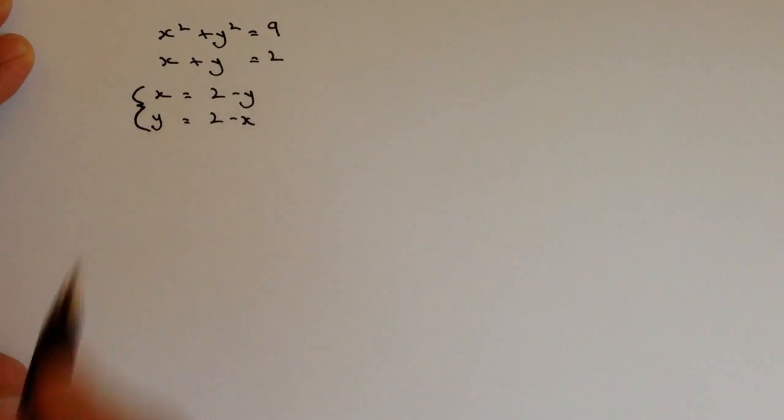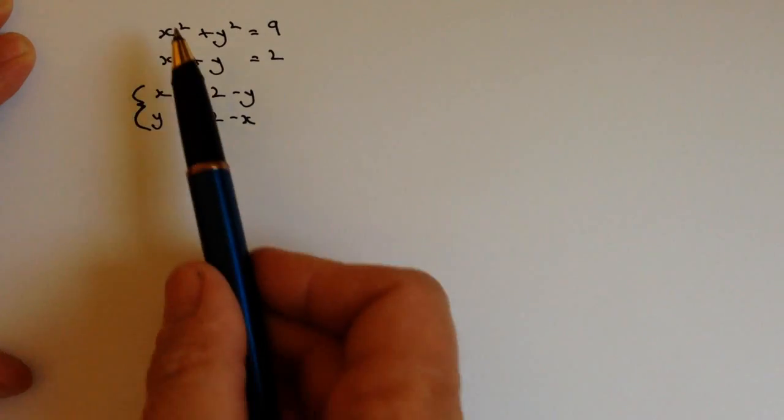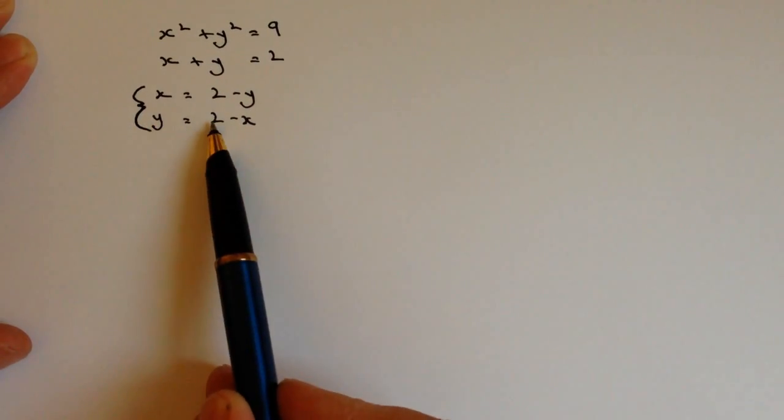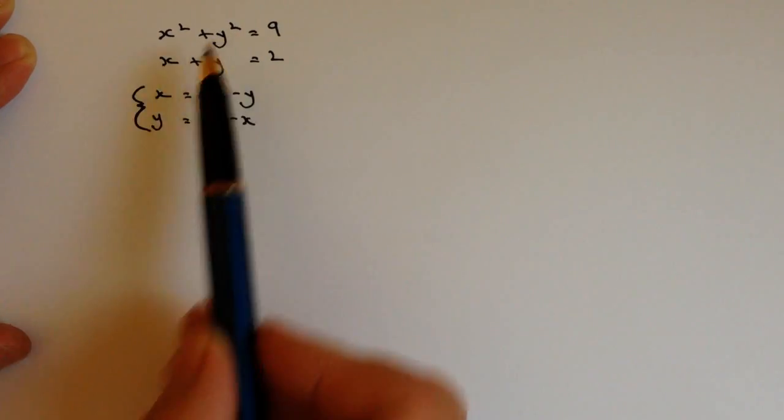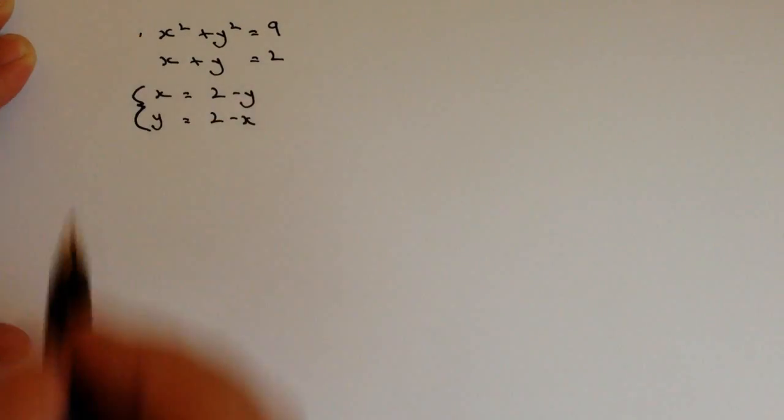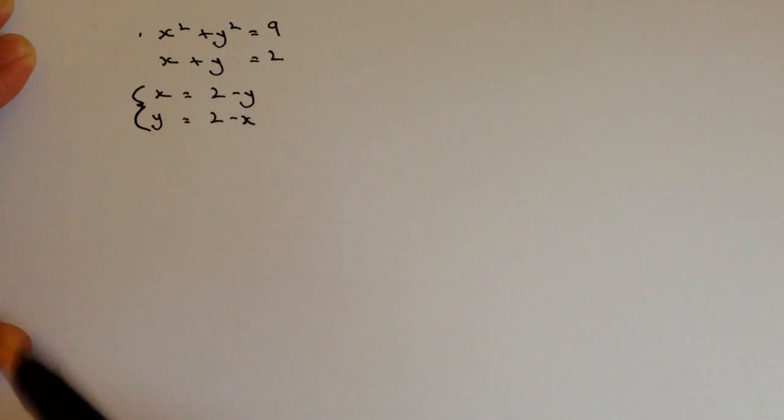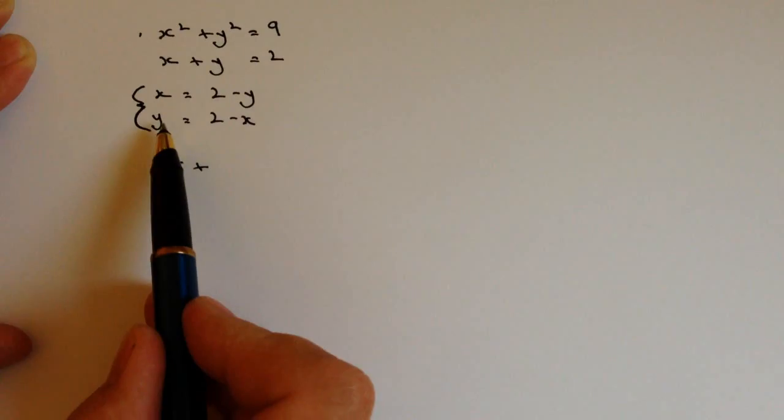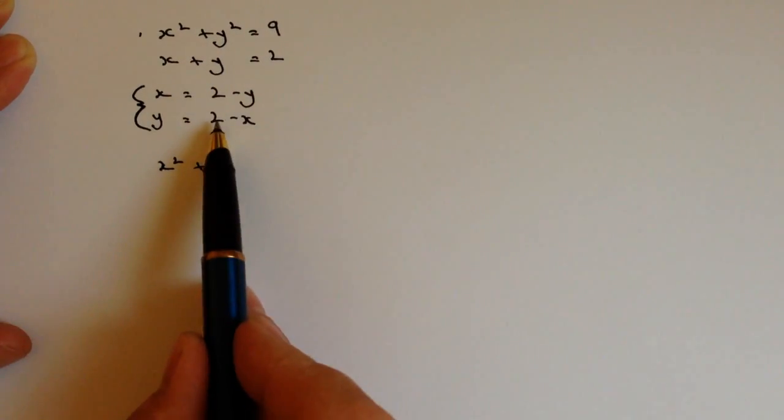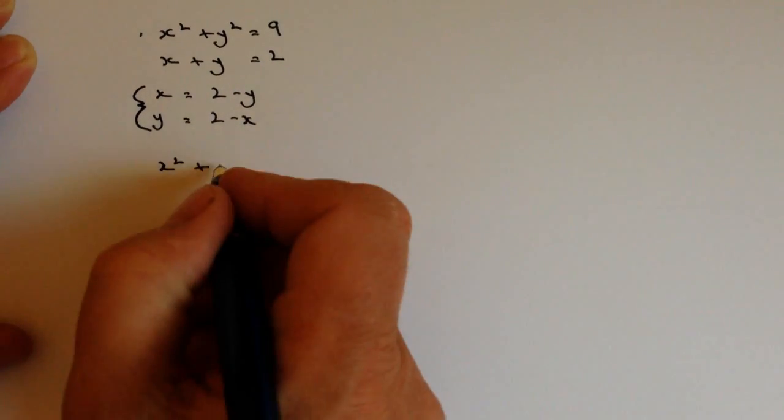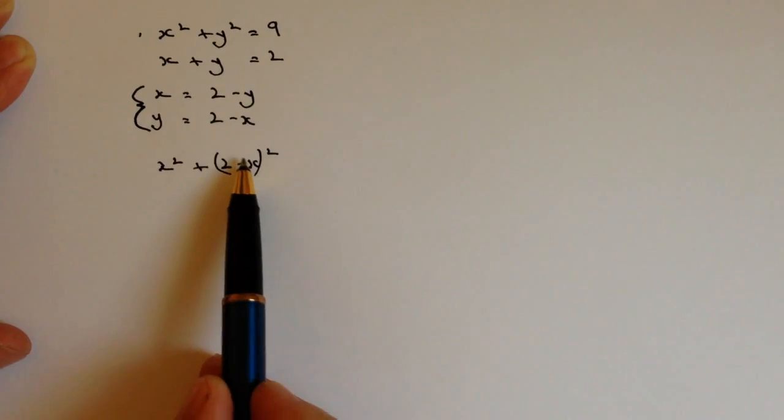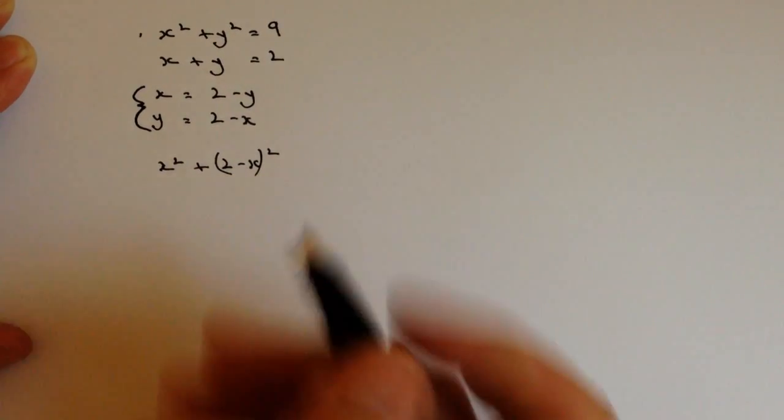And then I'm going to use that idea to feed into this first equation here by substituting. And the way I'm going to do it is I'm going to take this value of y, which we know is 2 minus x, I'm going to put it in here. So let's do that. So I'm going to rewrite this first equation as x squared plus, and rather than writing y here, I'm going to write 2 minus x squared. Because all I've done then is substituted the y value and that equals 9.